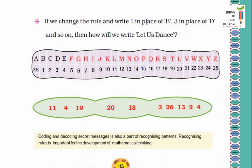Next: If we change the rule and write 1 in place of B, 3 in place of D, and so on. Then how will we write 'Latest Dance'? Look, we are changing the rules here. That means in place of B we will write 1, in place of D we will write 3. In this way, we are giving numbers to all the alphabets. So how will we write 'Latest Dance' in numbers?